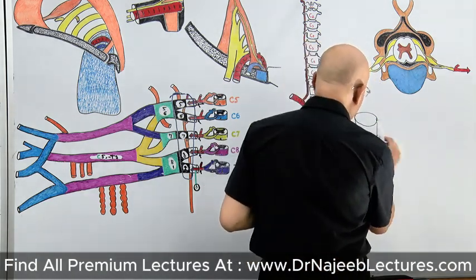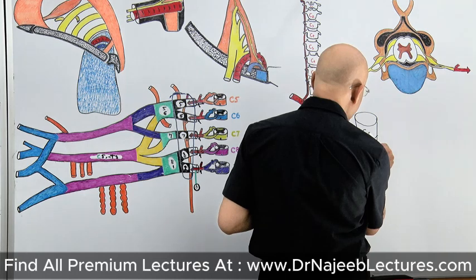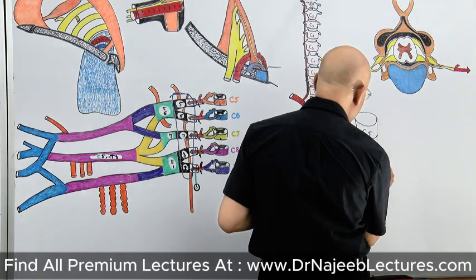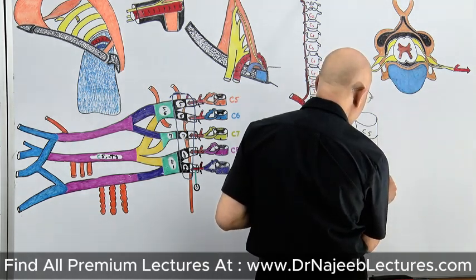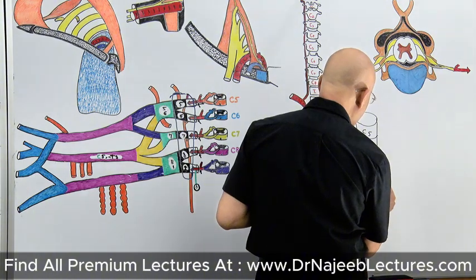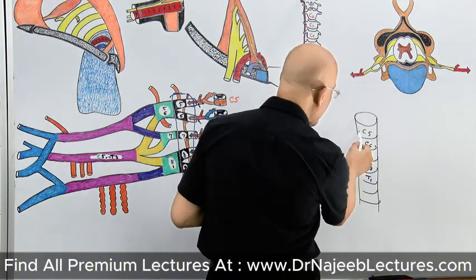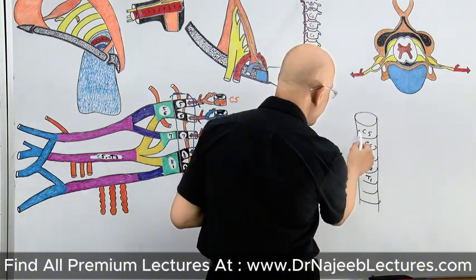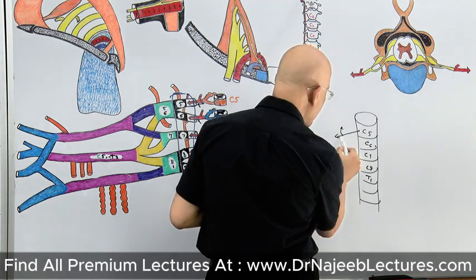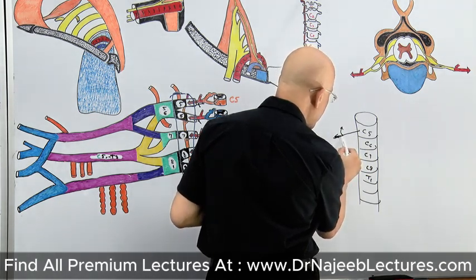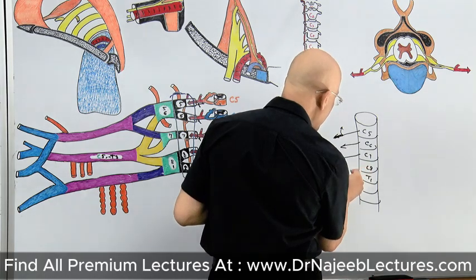From here, for example, if it is C5, C6, C7, C8, and T1 — from here, what is coming out? Yes — ventral roots. These roots. These are the ventral roots.